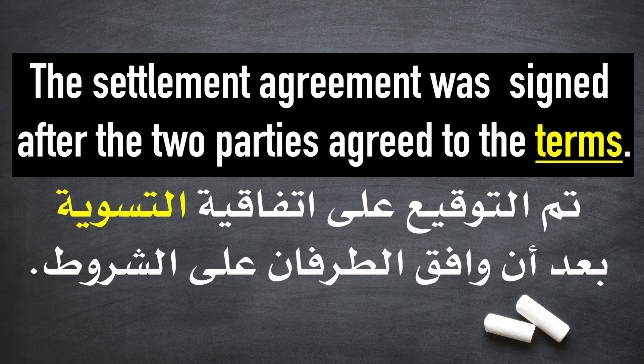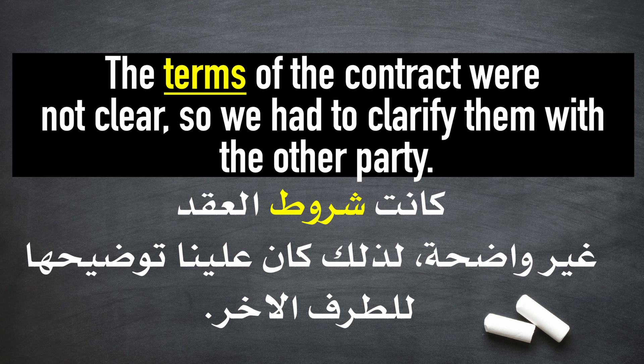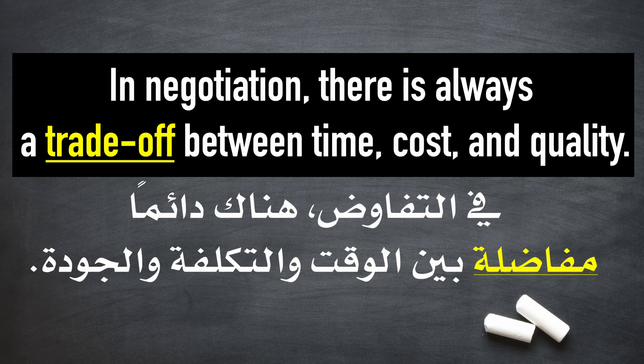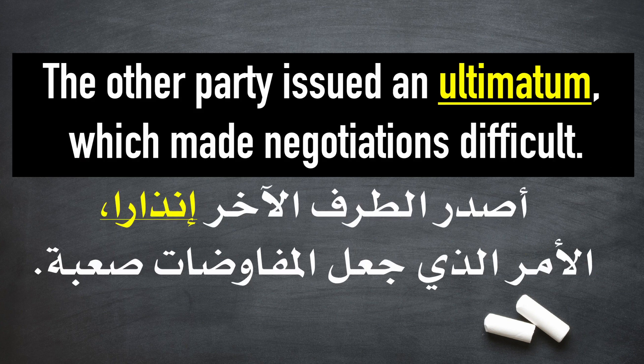Settlement: The settlement agreement was signed after the two parties agreed to the terms. Terms: The terms of the contract were not clear, so we had to clarify them with the other party. Trade-off: In negotiation, there is always a trade-off between time, cost, and quality. Ultimatum: The other party issued an ultimatum, which made negotiations difficult.